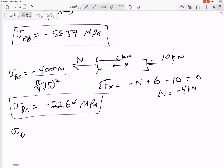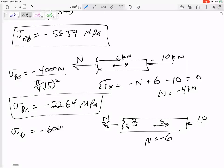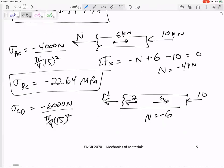What about section CD? What N do I need right here if I've got 2, 6, 10? If I want it in static equilibrium, if I want to sum to 0, I would get an N of negative 6. So this would be negative 6,000, pi by 4, 15 squared. Negative 33.95.